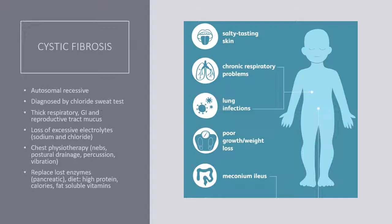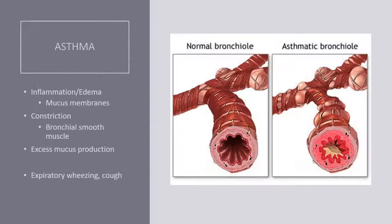It's important to remember that even though life expectancy is increasing, this remains a terminal illness. It's important to help the family and the child with coping and facing death, because even though overall life expectancy is increasing, some children will still have very short life expectancies if they have a severe form of cystic fibrosis.